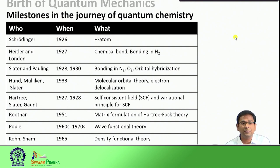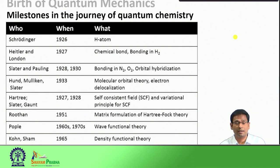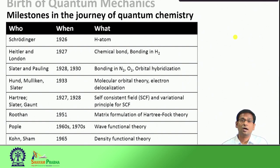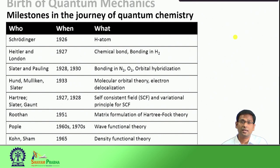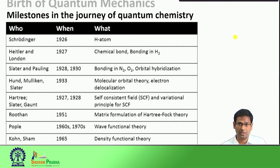Next we look at some key milestones in the journey of quantum chemistry. So far we have discussed some experiments that could not be explained through classical physics and we needed new ideas such as quantization of energy, quantization of radius, quantization of angular momentum. We also had wave-particle duality - particles can have wave-like nature and waves can have particle-like nature. All these new and unprecedented ideas were used to describe these experiments, and I will take you through some important milestones in the journey of quantum chemistry and how it has become so relevant in today's research in physics and chemistry.